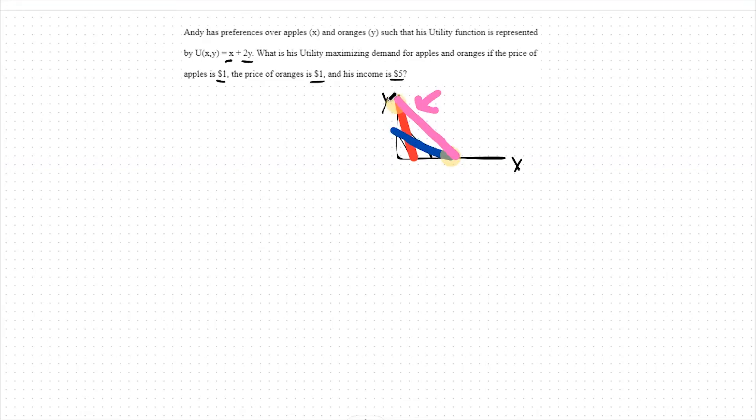In order to compare these points to figure out if we should purchase all apples or all oranges, we should take the slope of our utility curves. As we've learned before, the slope of the utility curve is our marginal rate of substitution. Remember, how we find the marginal rate of substitution is by taking the marginal utility of good x and placing it over the marginal utility of good y. The partial derivative with respect to good x of this utility function would be 1. That's our marginal utility of good x.